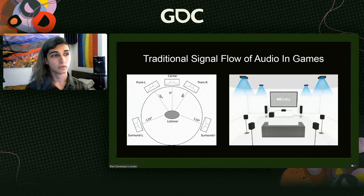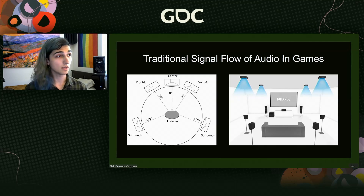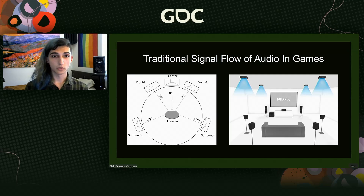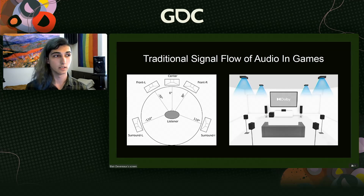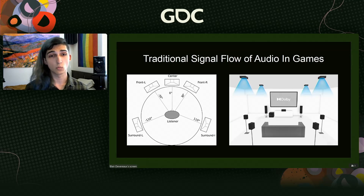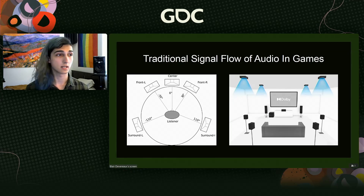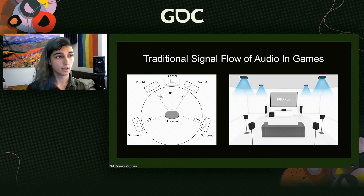Traditionally, we don't really use binaural audio in video games. Most games use a channel-based audio approach, meaning for each speaker there is a channel of audio with no differences between channels fed to the speaker system. Dolby Atmos, for example, is generally 7.1.4 — seven speakers on the horizontal plane, four speakers above, and one subwoofer.